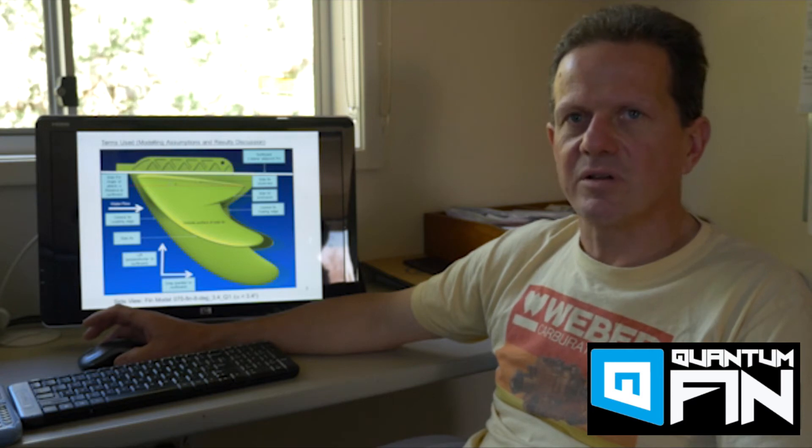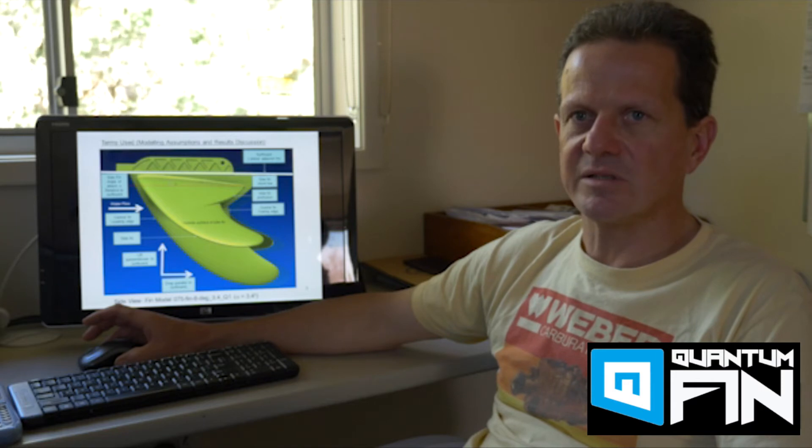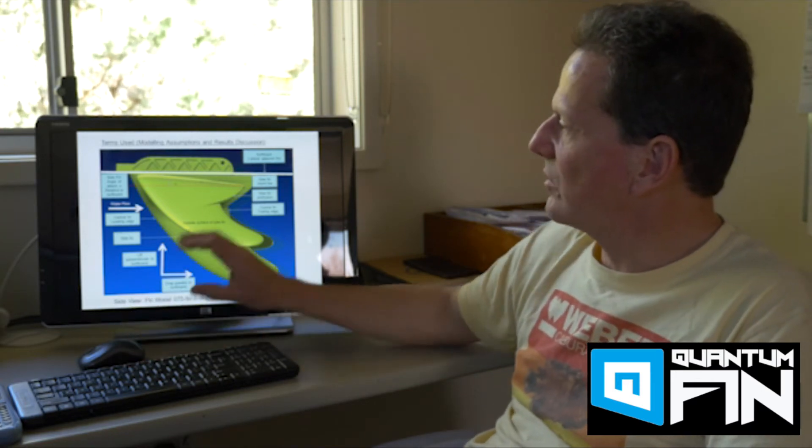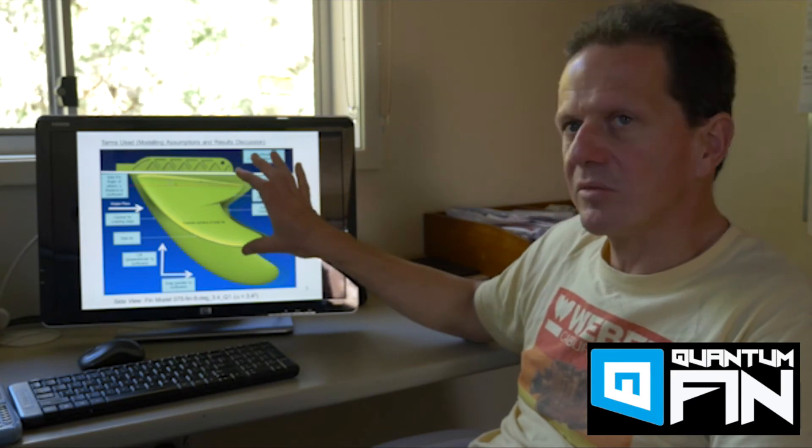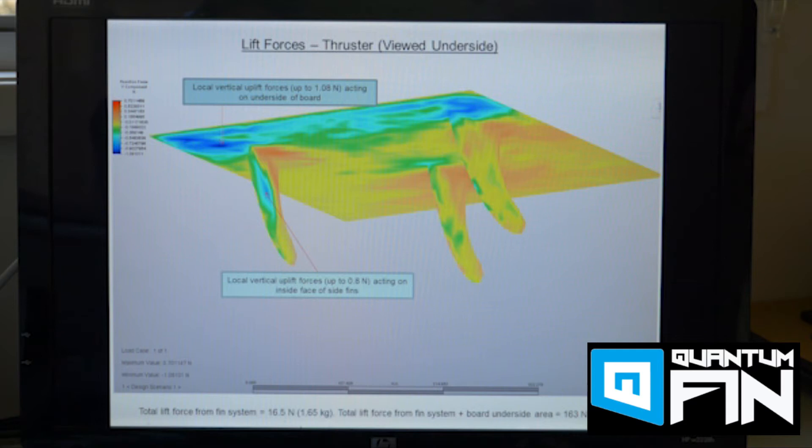So what I'm going to show you now is some of the computer results which I've got from analyzing and optimizing the QFin system against the thruster setup. So here we're starting to look at the 3D model which was the basis for this modeling work. So what we're looking at here is a plot where we're looking at the underside of the board as in conditions which would be similar to about a one meter type swell.